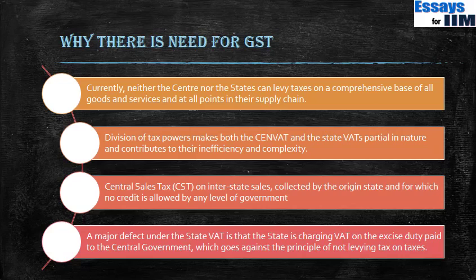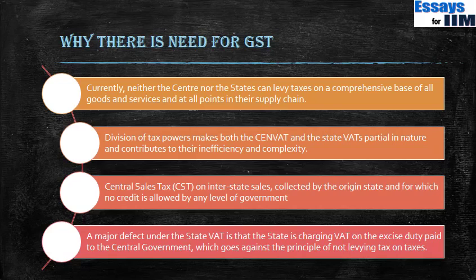Similarly, with value added tax there is a credit for tax already paid — like in the previous example, the bread roll producer was paying Rs. 15 in tax but gets Rs. 10 back and effectively pays only Rs. 5. However, there is no such credit allowed on the Central Sales Tax for interstate sales; that is not taken into account when calculating value added tax, which is a very big flaw. A further defect under state VAT is that the state charges VAT on the excise duty payable to the central government, which again goes against the principle of not levying taxes on taxes. These are the basic complications why GST was needed.